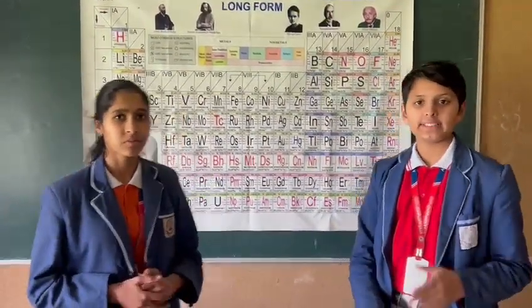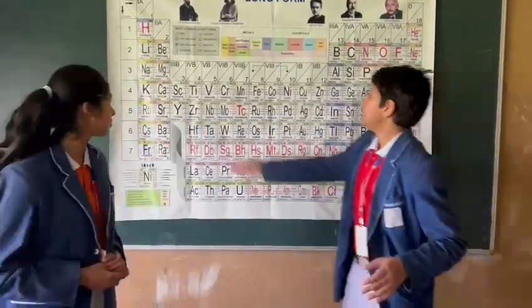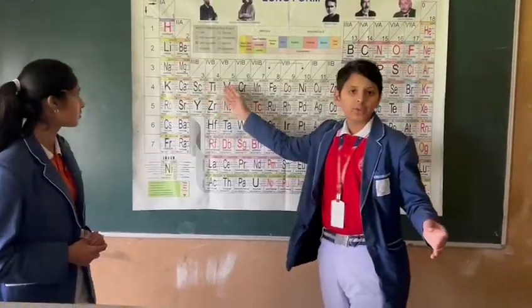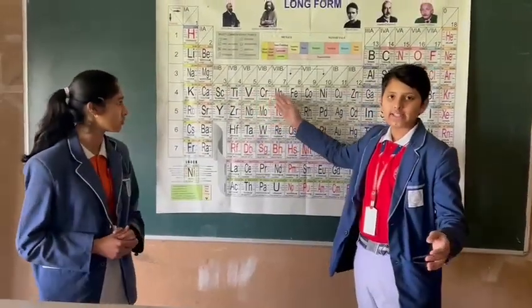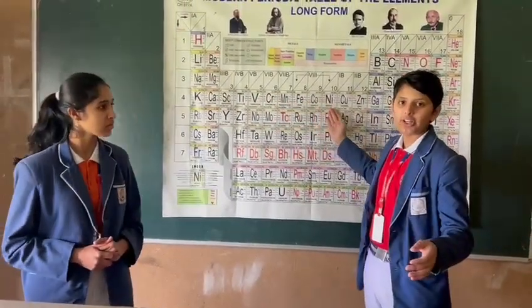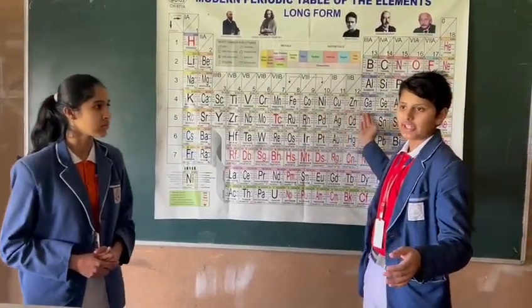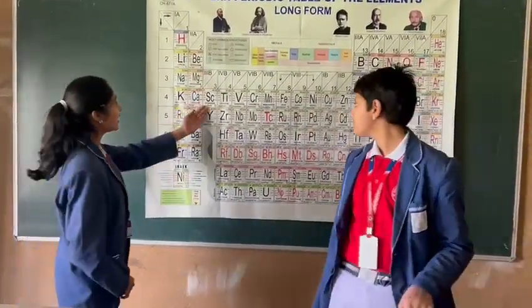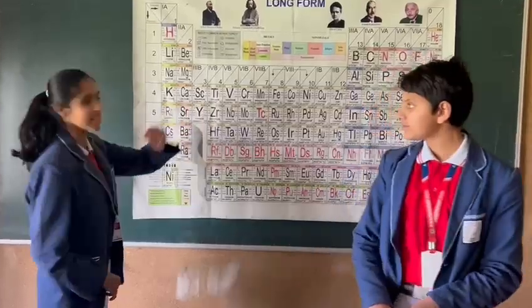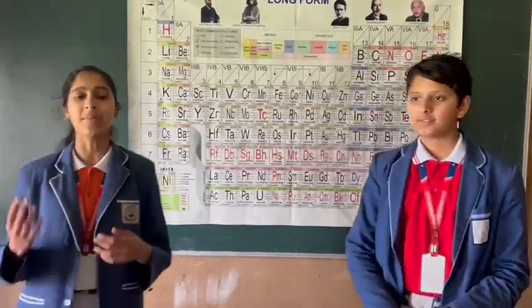The 3D series trick is: Sachin Tendulkar Very Crazy Man Fir Koi Nei Century jadinge. The 3D series is: Scandium, Titanium, Vanadium, Chromium, Manganese, Iron, Cobalt, Nickel, Copper, Zinc.